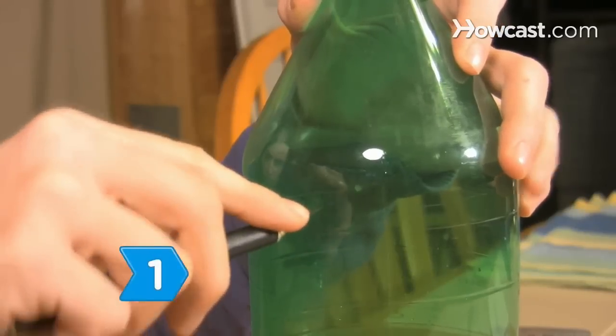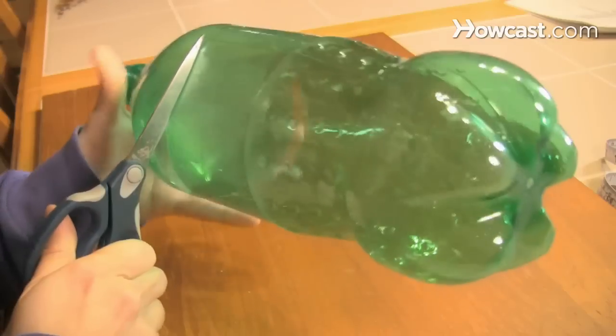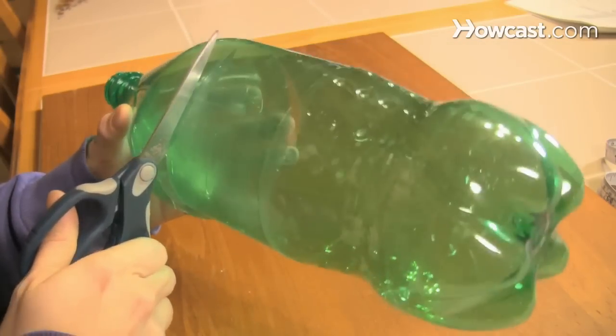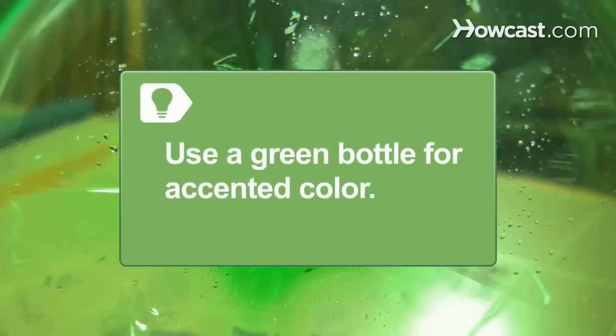Step 1. Cut off the top of the bottle at the top of the bottle's smooth section to make an even edge about 3 inches above where the fluted rim will be. Use a green bottle for accented color.